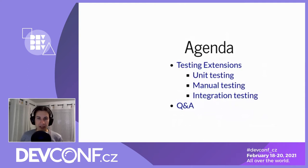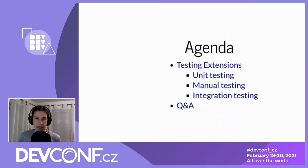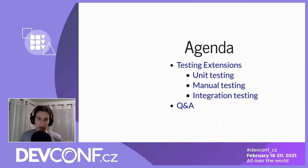Let's take a look at what we'll do today. As the title of the talk suggests, it's about testing extensions for Visual Studio Code - really from a developer perspective. The main agenda is how to test extensions, and I'll be covering the three big approaches: unit testing, manual testing, and integration testing. At the end we'll have a Q&A session.